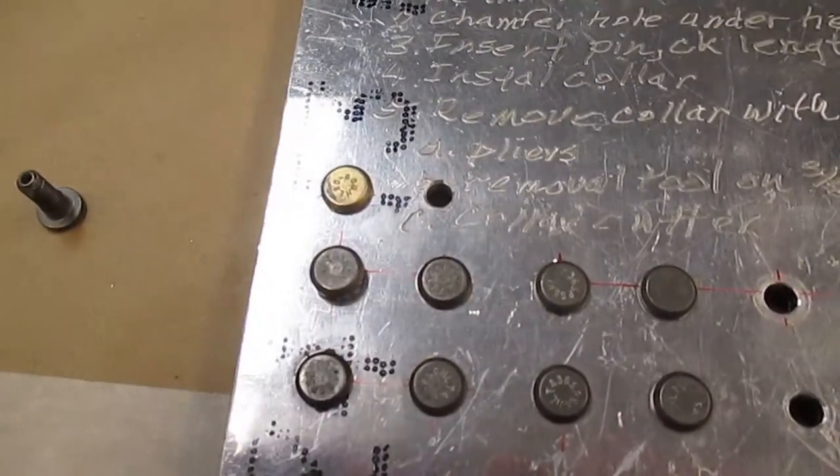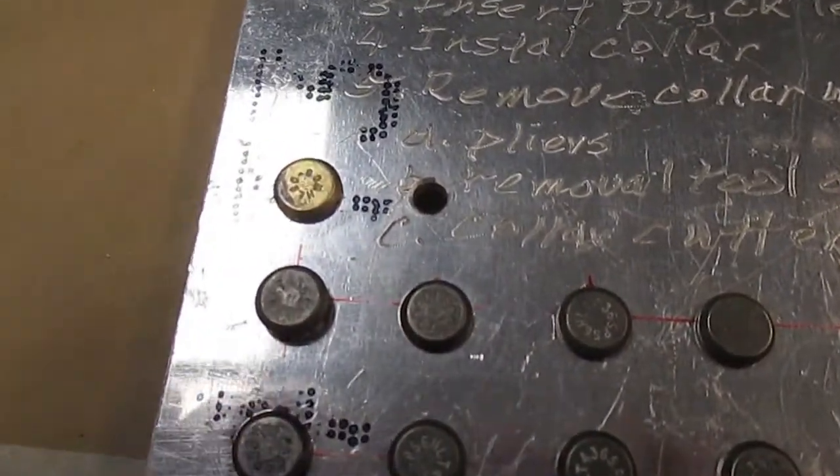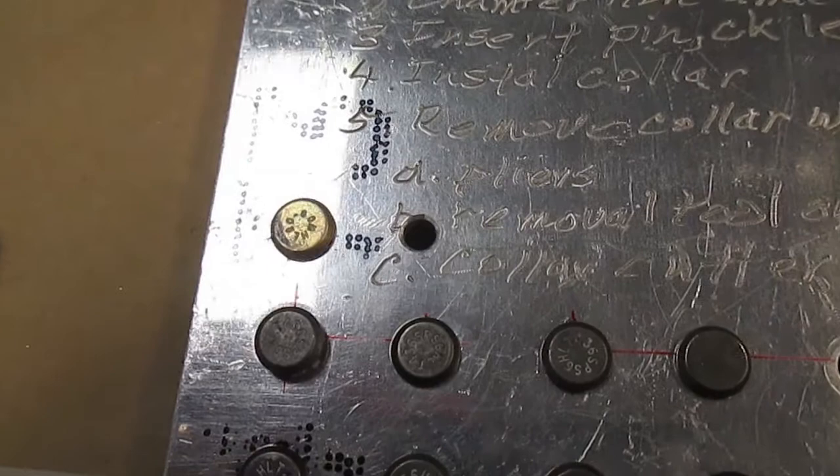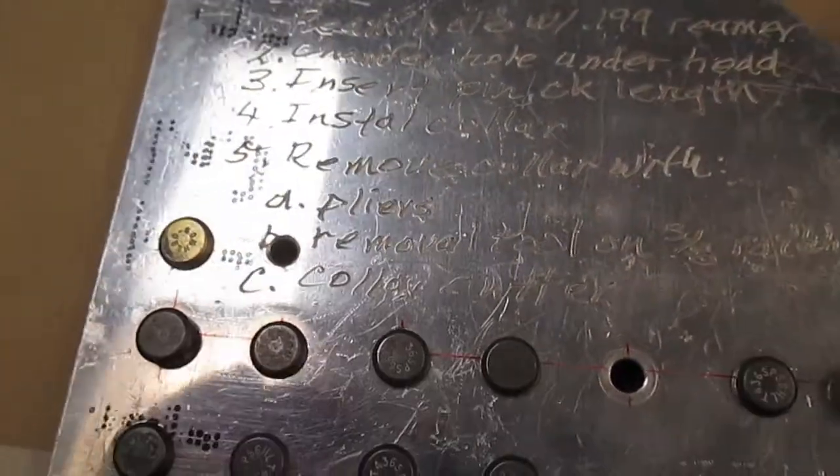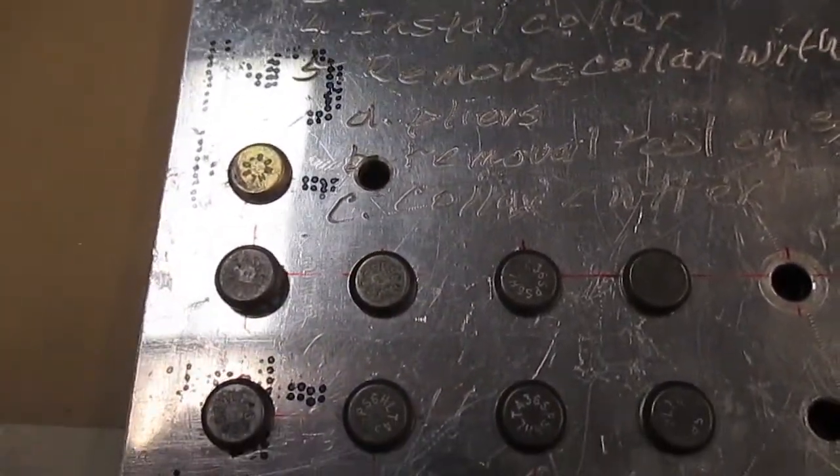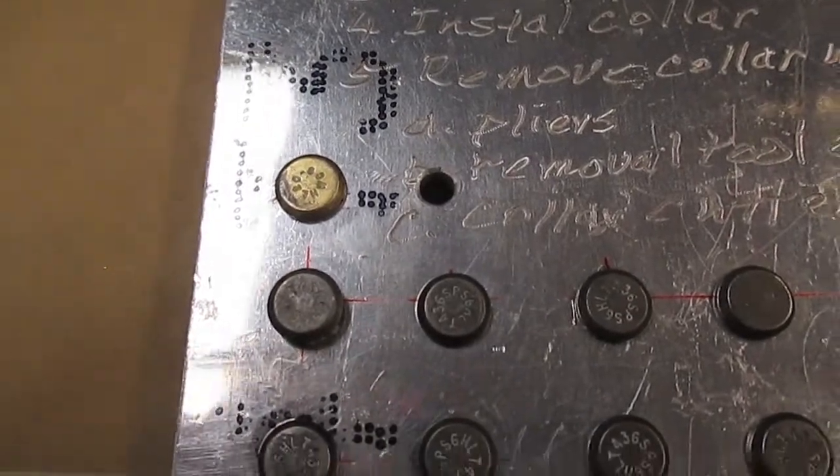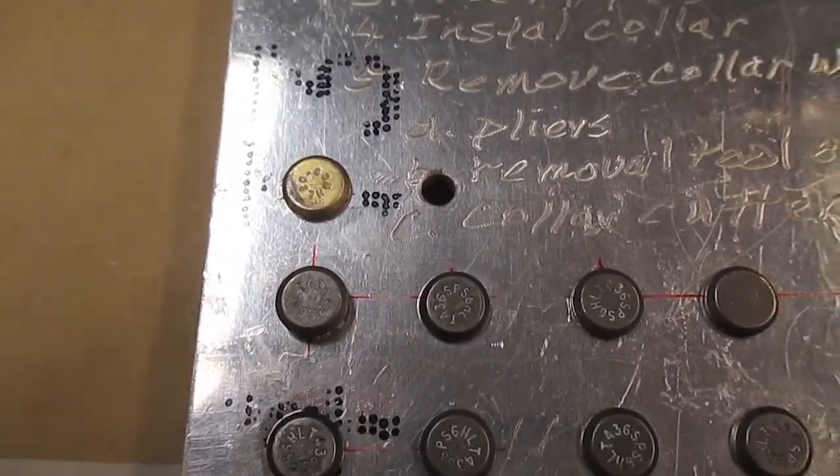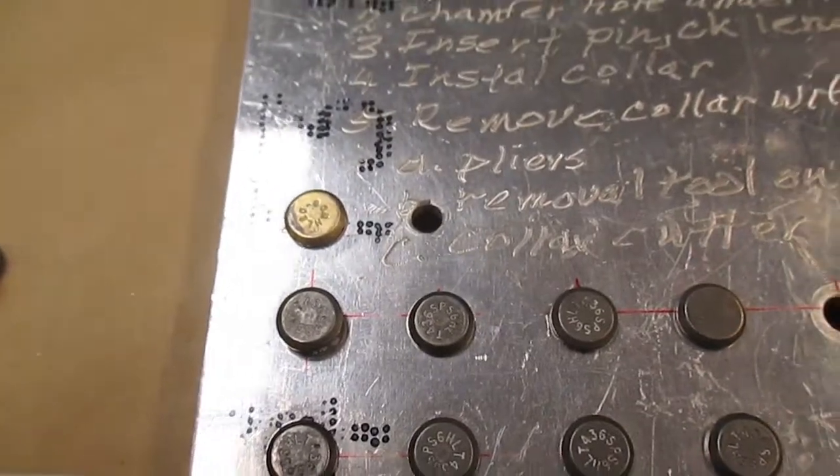Now the question is, we're back to that stage again. What size, what length of material do we put in there? We're stuck once again trying to figure out what is that dimension for the length, because the length is super critical. And so what did we say we need? Anybody remember? A grip gauge, right?